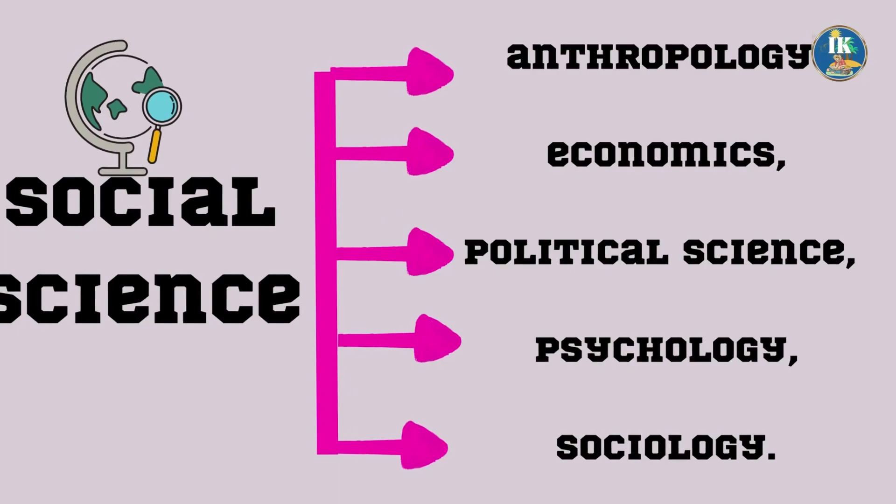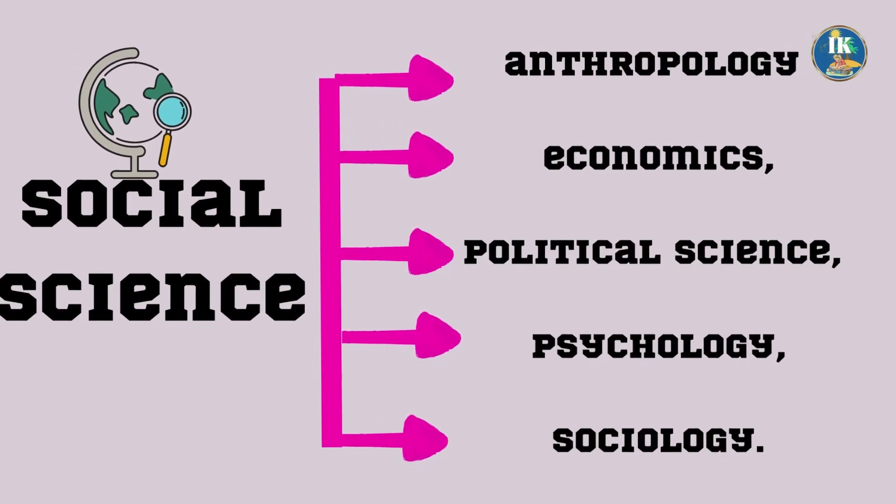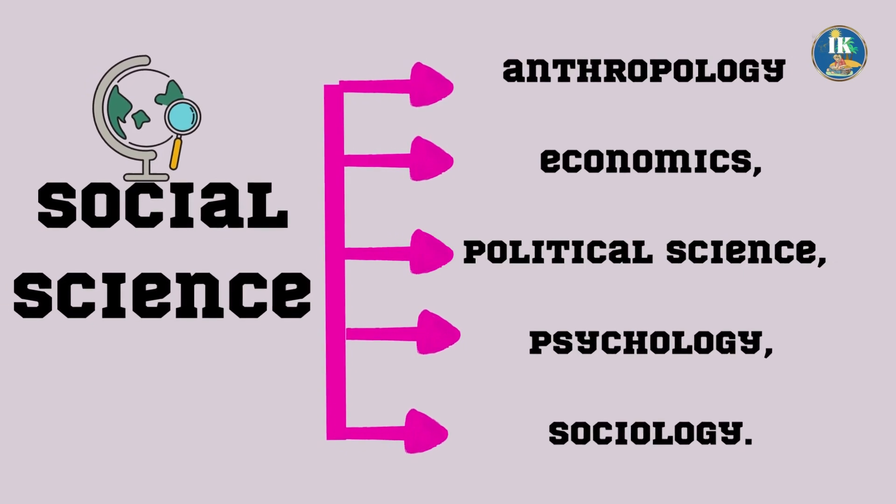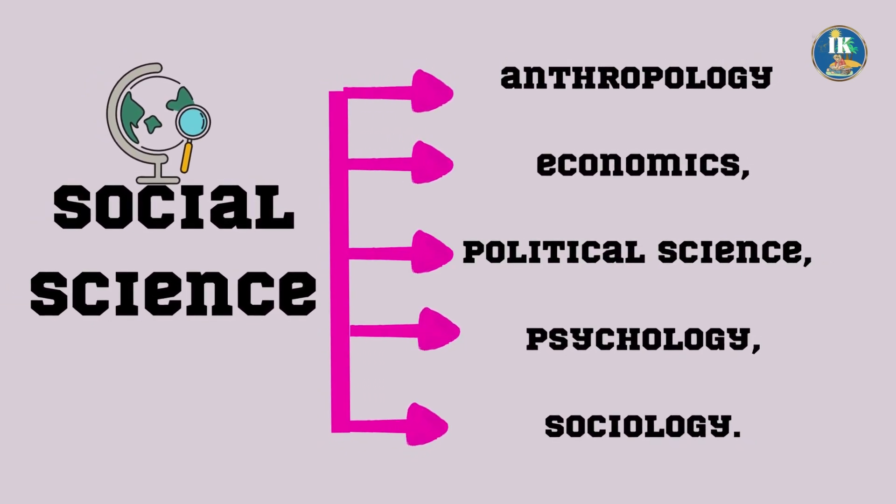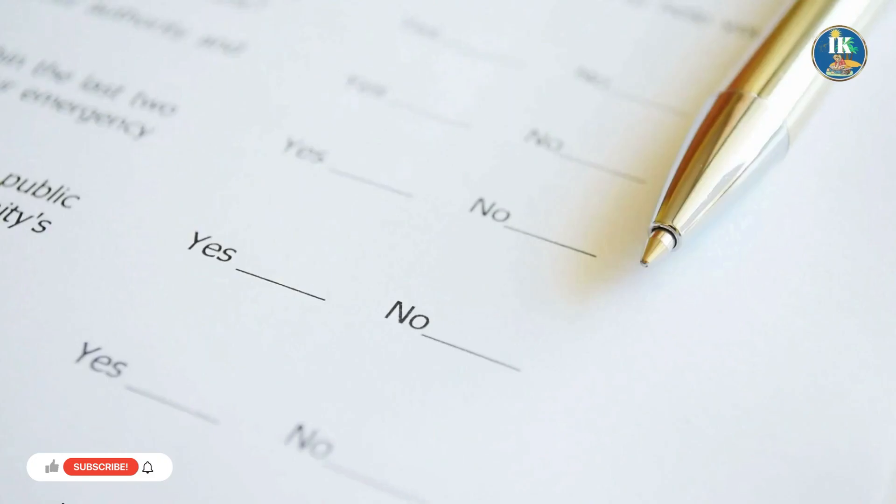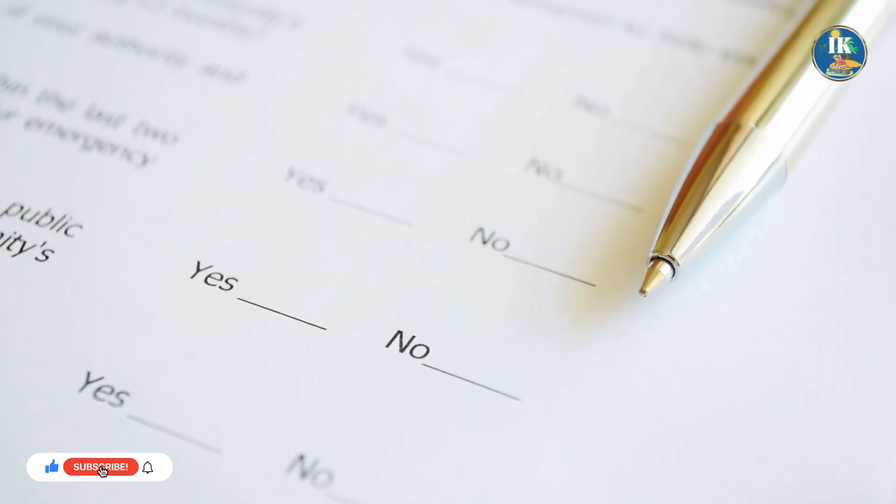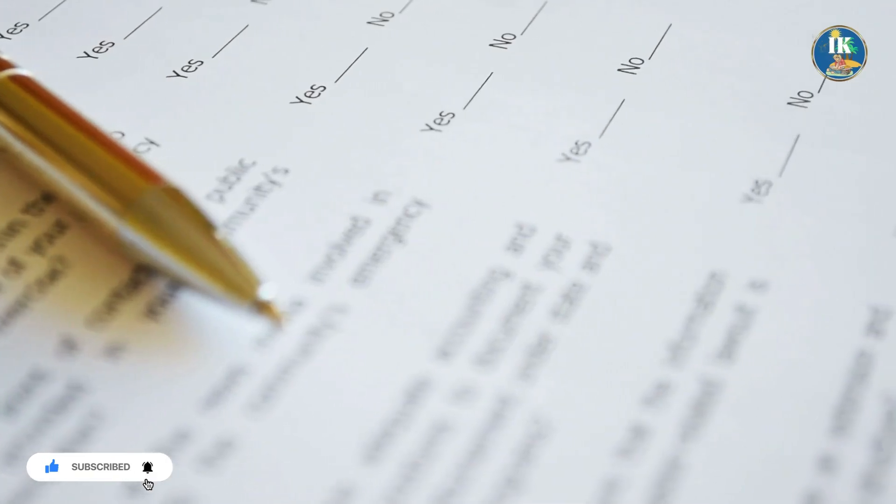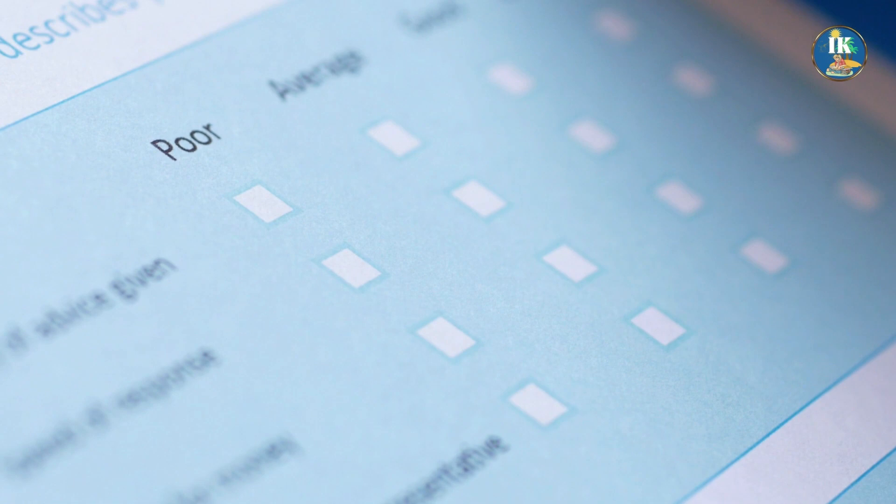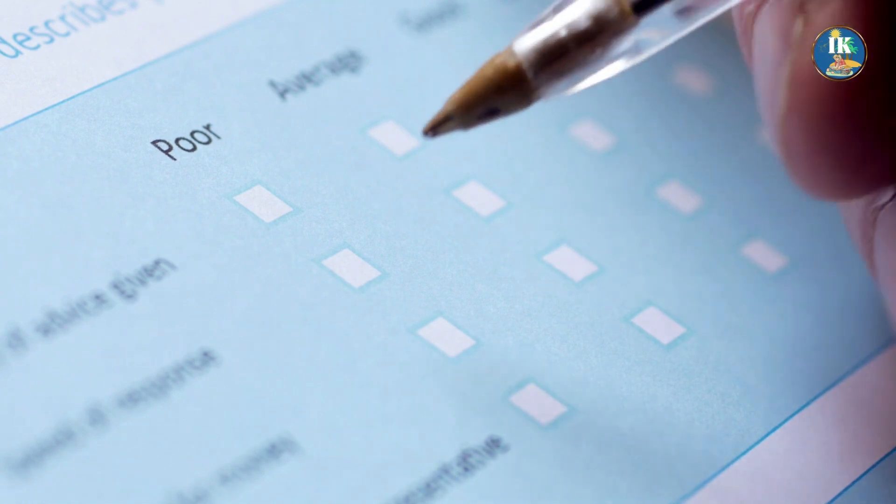Social sciences, on the other hand, look into aspects of social interaction and human behavior. Sociology, psychology, and economics are a few examples of social sciences. Social scientists use research techniques such as surveys, experiments, and case studies to understand social phenomena and human behavior.